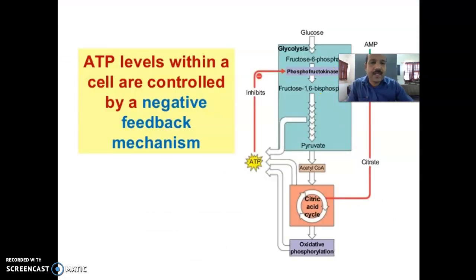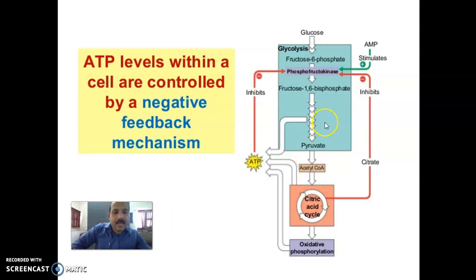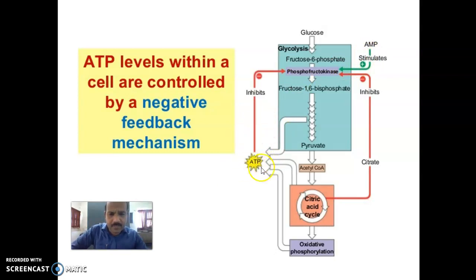We have to see the different stages of glycolysis in detail. ATP levels within a cell are controlled by a negative feedback mechanism. ATP has both positive as well as negative effects. PFK and ATP are highly significant as far as glycolysis is concerned.